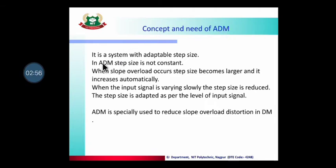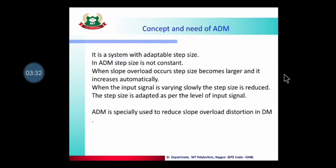ADM is a system with an adaptable step size. 'Adaptable' means it can change. If the original signal slope is much higher, the step size will automatically increase. If the original signal slope is very low or constant, the step size will automatically decrease. This is why ADM is called adaptable. In ADM, the step size is not constant — when slope overload occurs, the step size becomes larger; when the input signal is varying slowly, the step size is reduced.